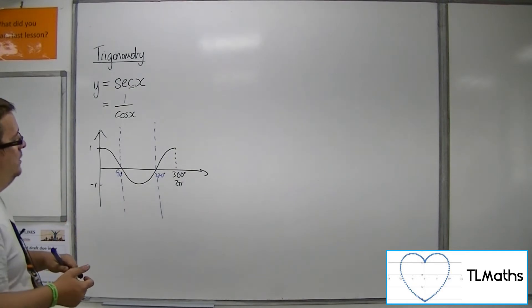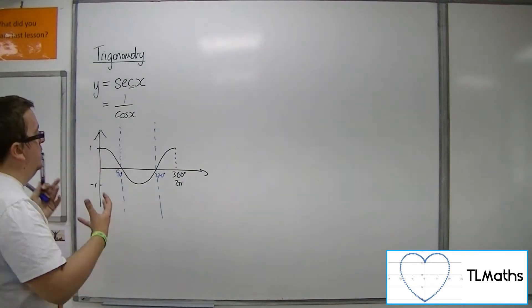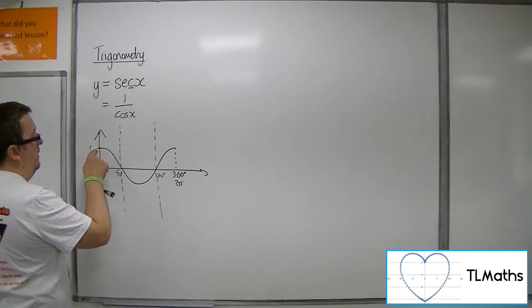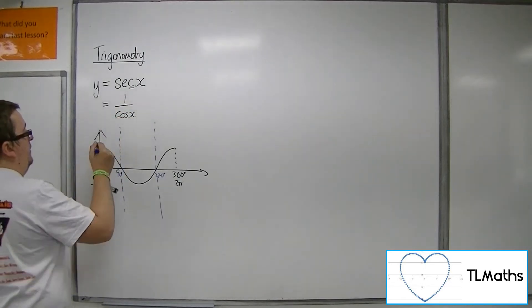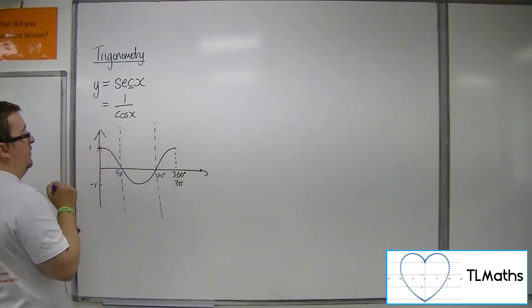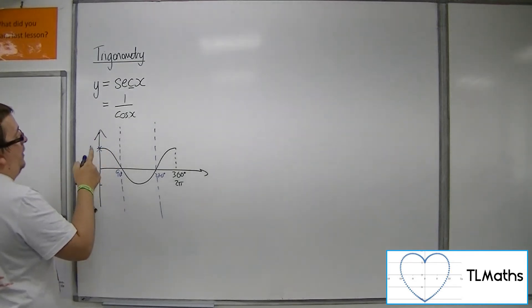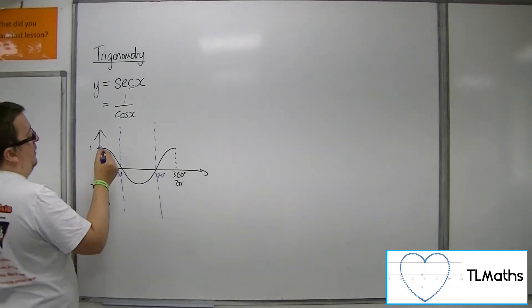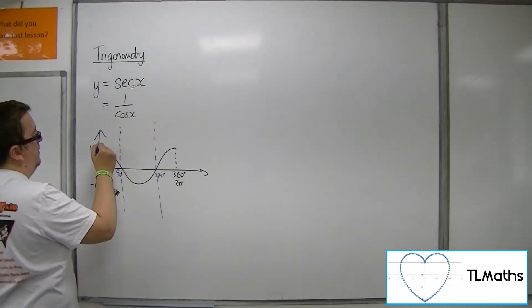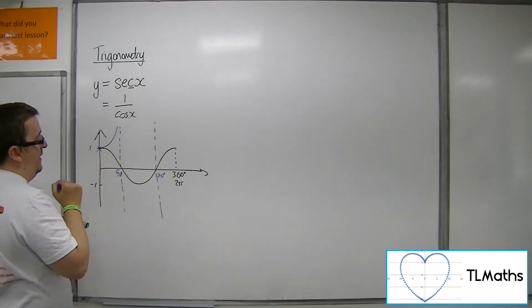When cosine is 1, we have 1 over 1, which is 1, so the sec curve must go through that point. Because cosine is positive between 0 and 90, sec must be positive between 1 and 90, because it's 1 over a positive number. So the curve must look like this.